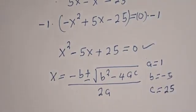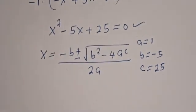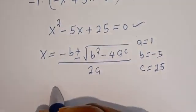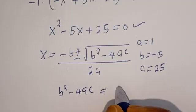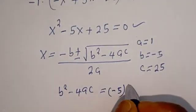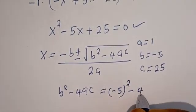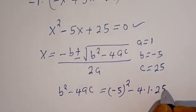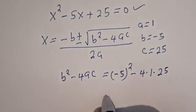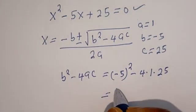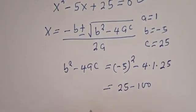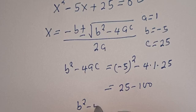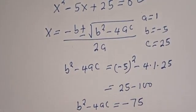Let's substitute. Now let's consider the discriminant: b squared minus 4ac is equal to (minus 5) squared minus 4 times 1 times 25. This is equal to 25 minus 100, so b squared minus 4ac is equal to minus 75.